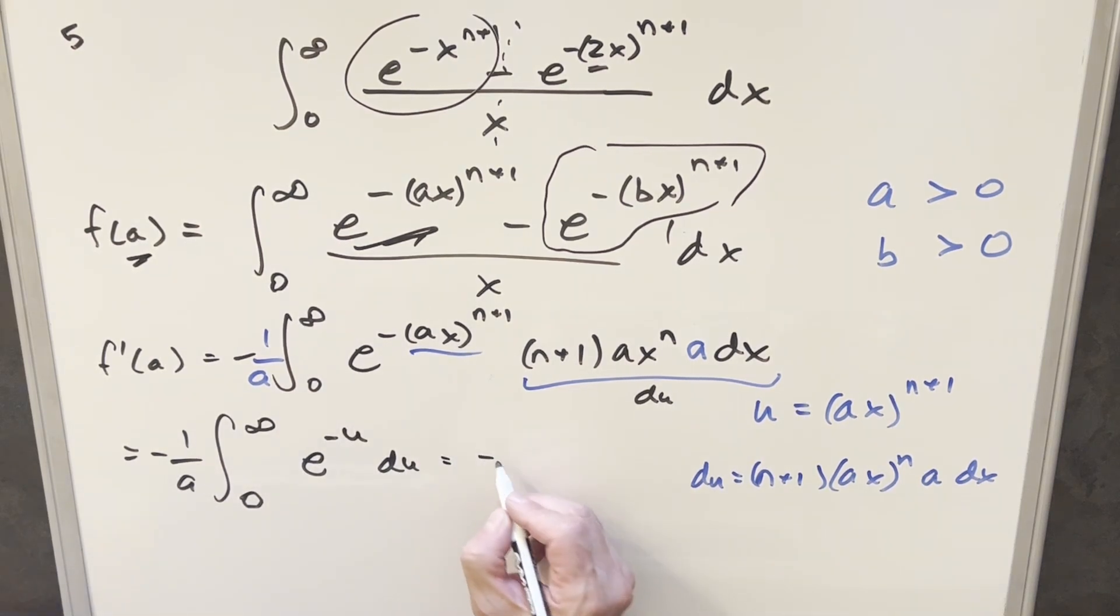We have minus 1 over a in front. When you plug infinity in here, it's still going to infinity. You plug 0 in, lower bound is going to be 0. This here is just going to become e minus u. Everything over here is du. And so this simplifies really nicely. Go ahead and integrate this. We have our minus 1 over a in front. Integral here is going to be e minus u, but a minus sign is coming out. So I'll just use it to change this one to a plus.